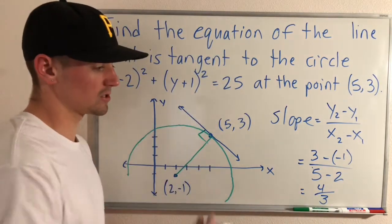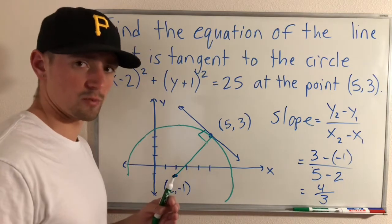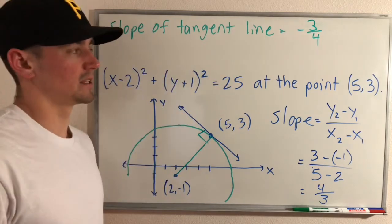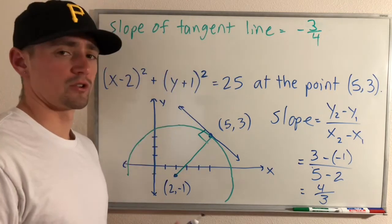Which means the slope of our tangent line would be the negative reciprocal of that which is -3/4. So we know the slope of our tangent line needs to be -3/4.